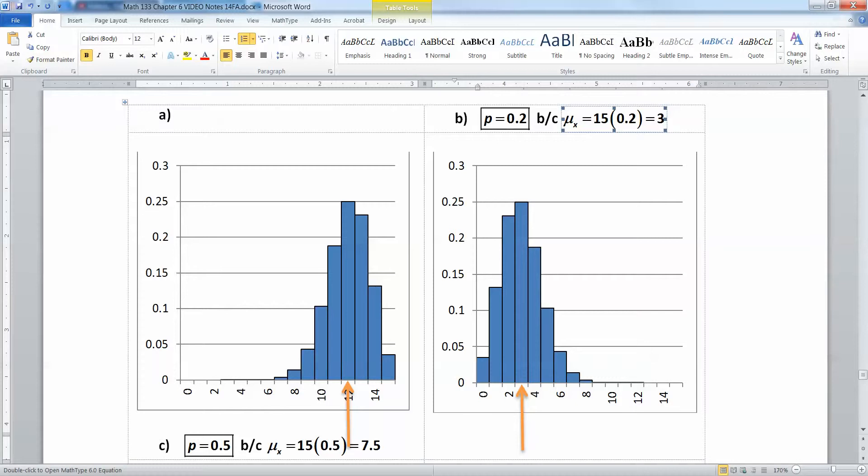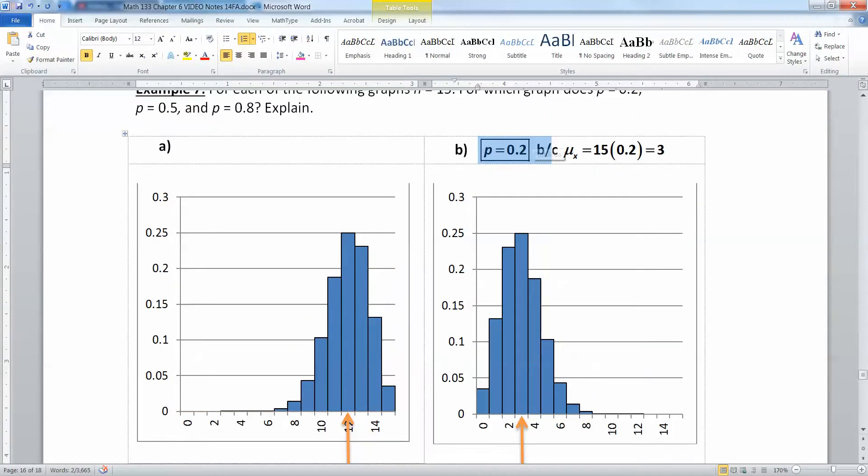And you can see on this graph that your balance is over here on the low side. Another way to think about it is that if your probability of success is 0.2, then most of the time you're going to have 0, 1, 2, 3, 4, 5 successes. It'd be very rare to have 10 or 12 successes out of 15 if your chance of success on any one trial is 0.2. Think about it like a multiple choice question. If you had a multiple choice question where you had a 0.2 chance of getting it right, you're not going to get that many of them right. So you'd expect to have low values on this, not high values.